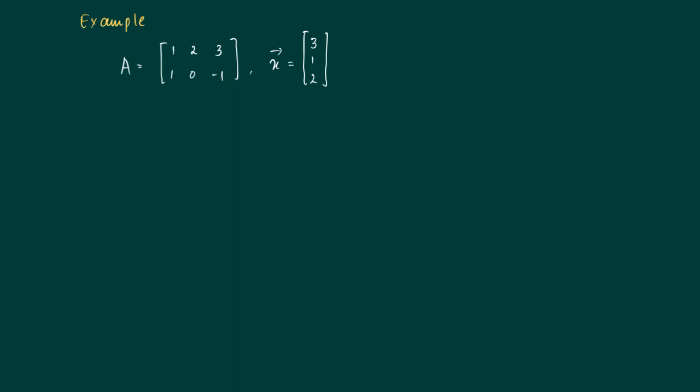Consider the following example, so we have a 2 times 3 matrix A and a 3 times 1 matrix x which is actually a column vector. The inner dimensions they agree so we can form the product A times x.